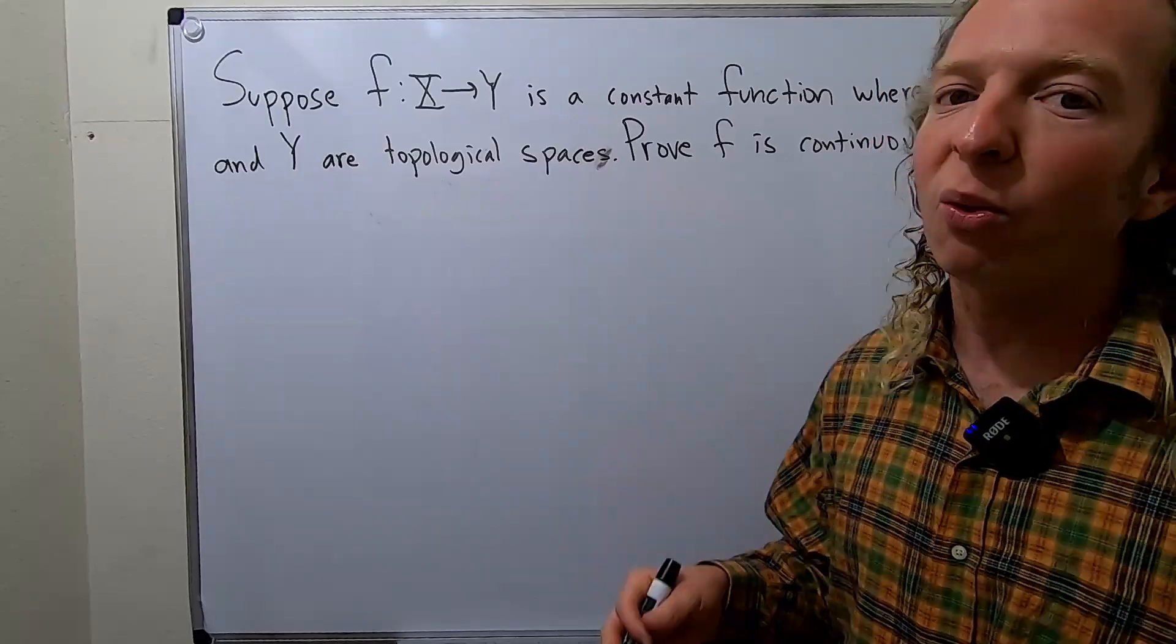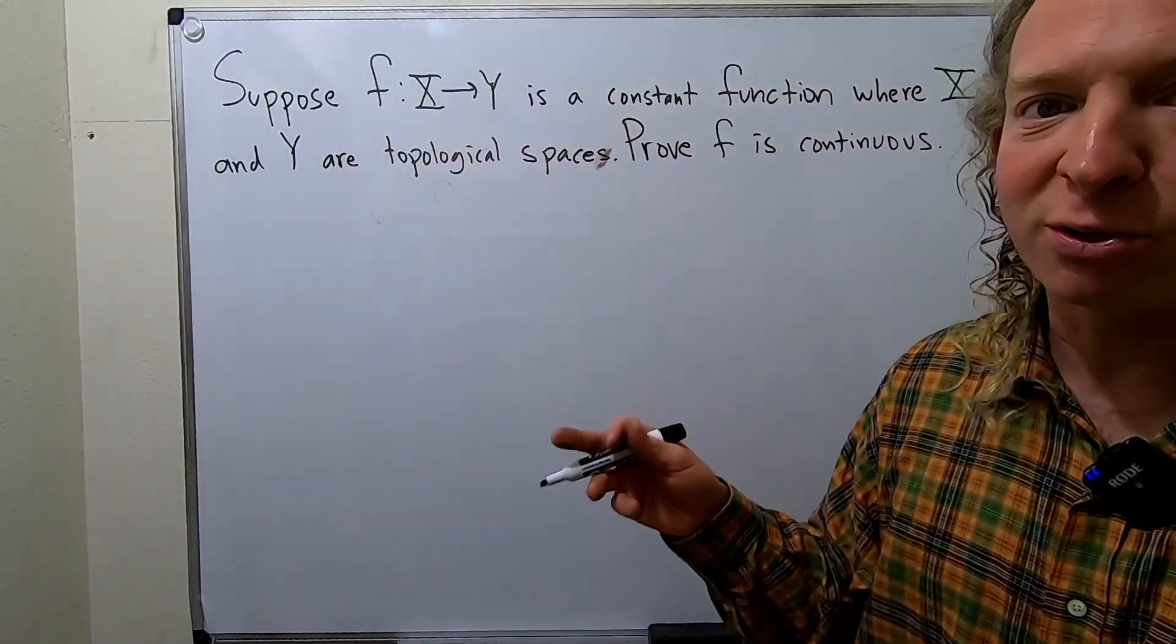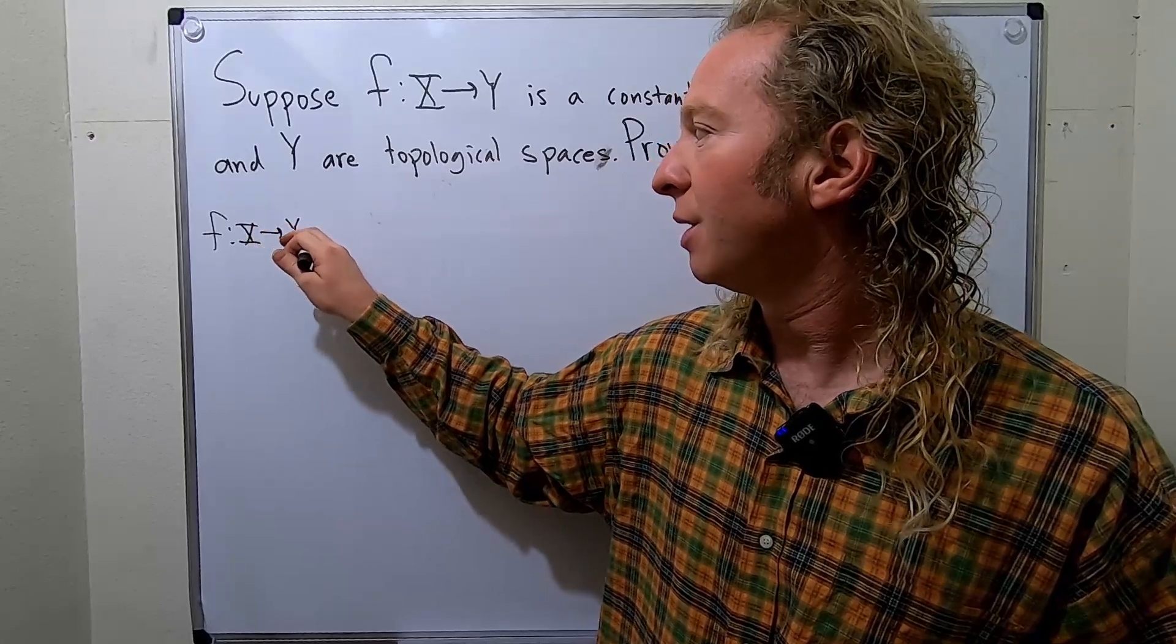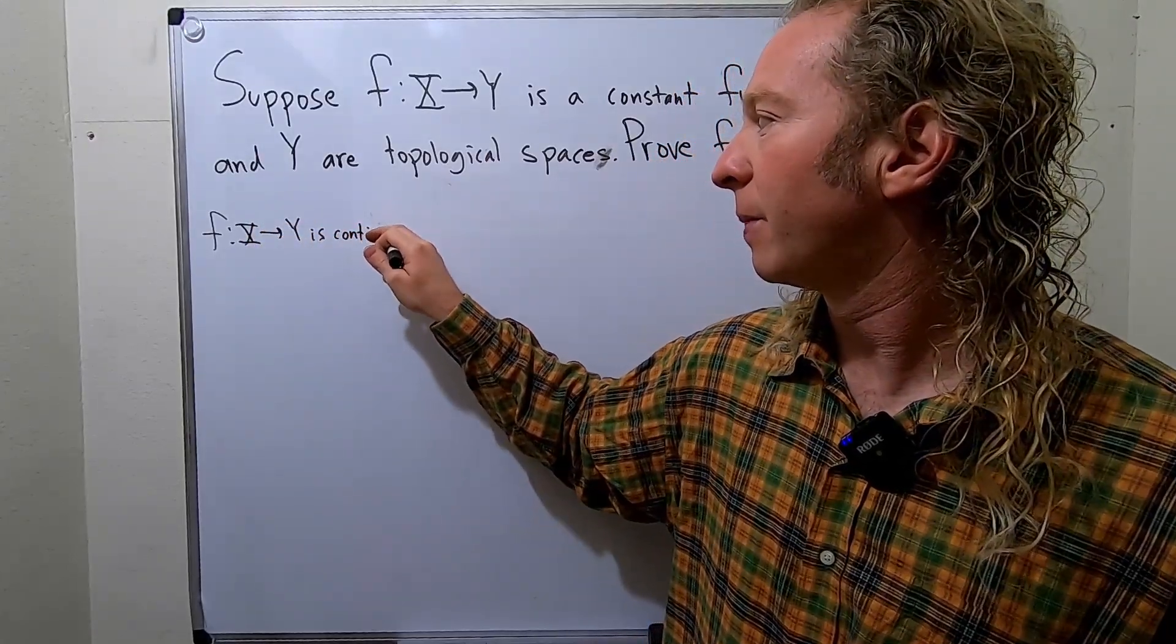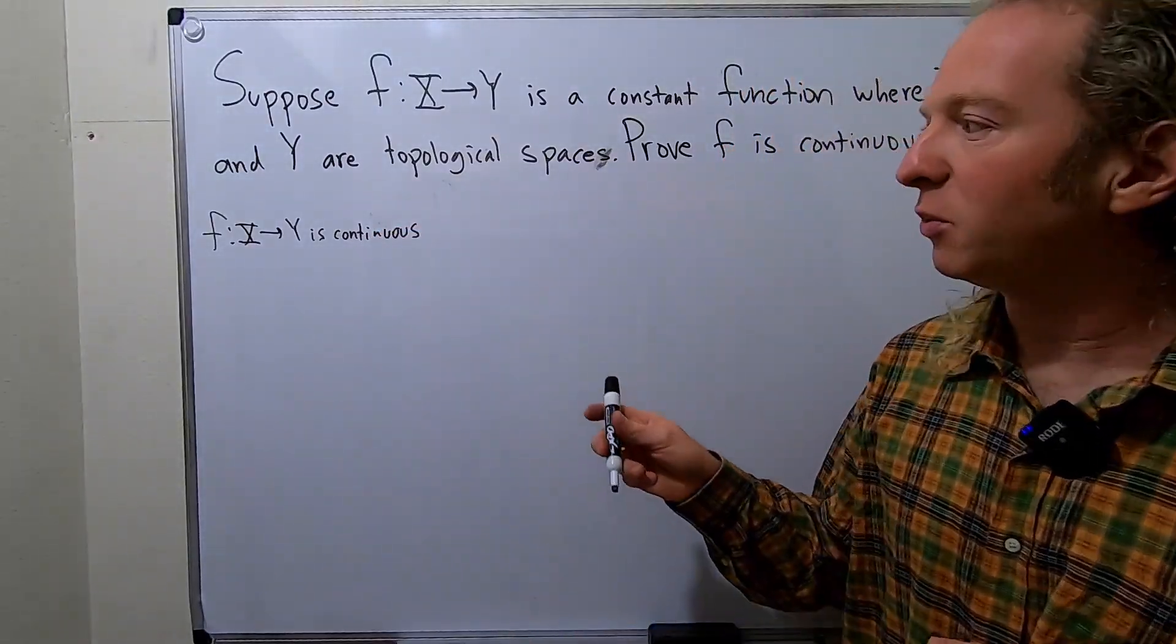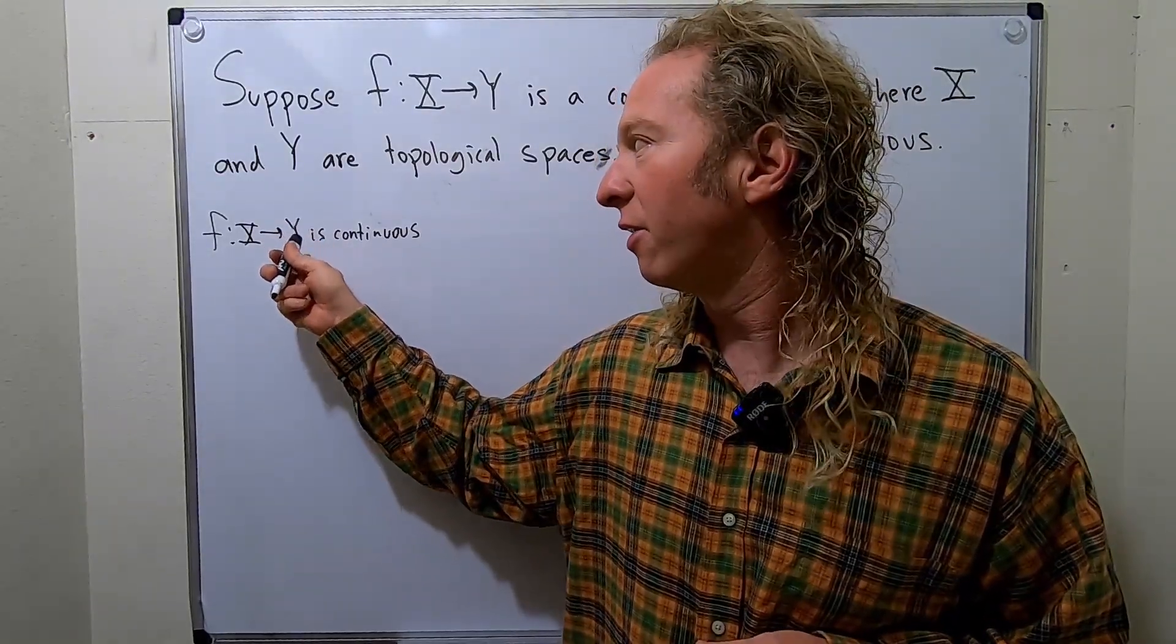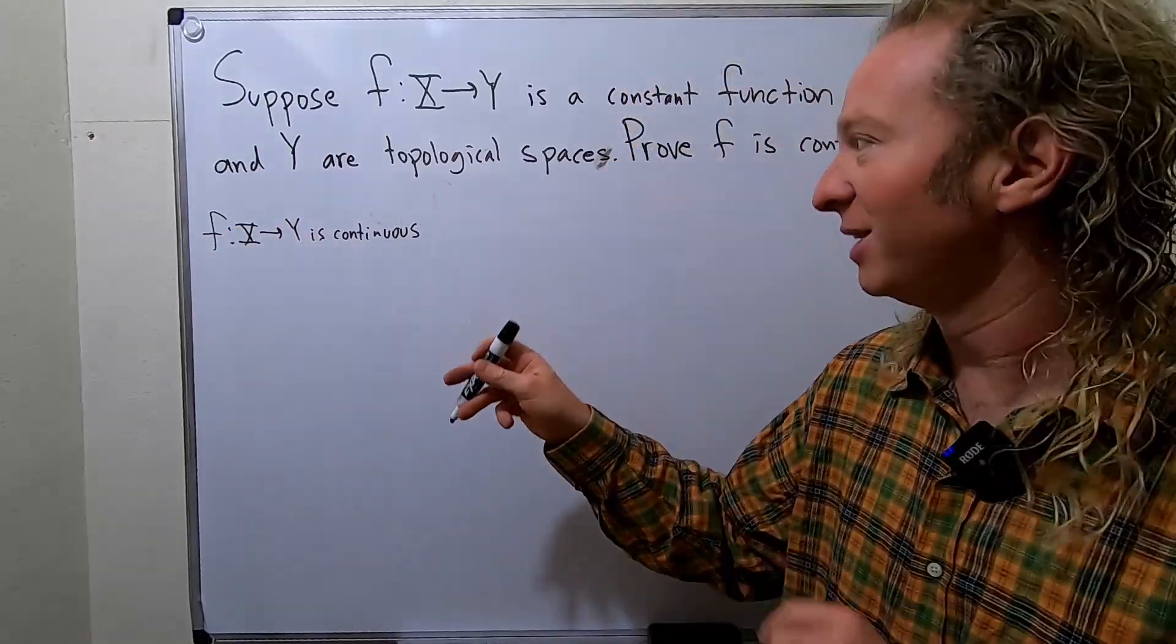So let me briefly recall what it means for a function to be continuous when you have topological spaces. So we say a function f from x to y is continuous. And first let me say it in words. Basically, whenever you take an open subset of y, the inverse image of that subset under f is open in x. So let me write that down.